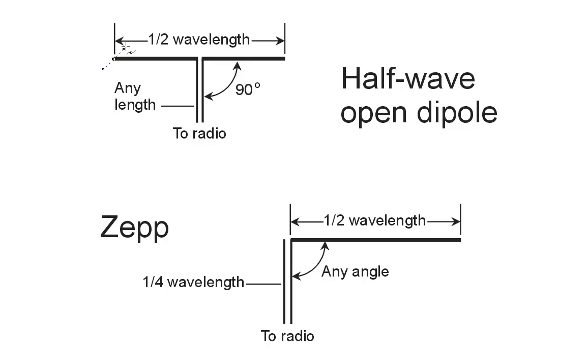It's fed at what is known as a current loop. If you consider the current distribution on an antenna like this, it looks something like that. Maximum at the center and zero at the ends. That's a current loop, these are current nodes.